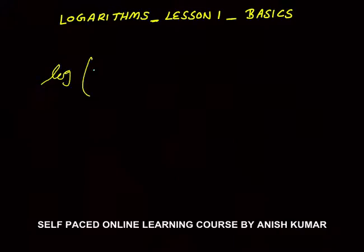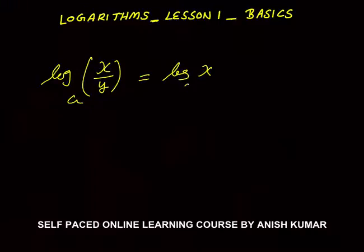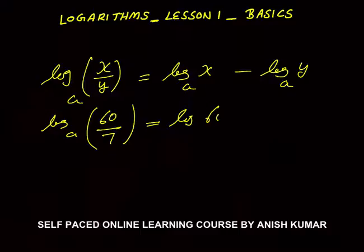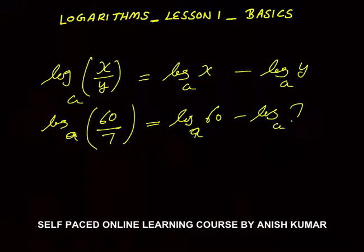When division is given, log of (x/y) to the base a can always be written as log_a(x) − log_a(y). For example, log(60/7) to the base a equals log_a(60) − log_a(7).